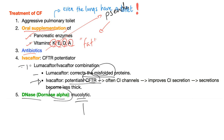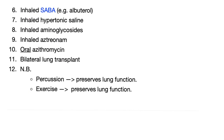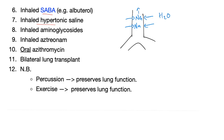DNase or Dornase Alpha is a mucolytic for the thick secretions in cystic fibrosis. You can try inhaled short-acting beta agonists such as albuterol, or inhaled hypertonic saline — the high sodium content pulls water from cells into the airway space, which is then coughed out, decreasing secretion viscosity. Inhaled aminoglycosides and inhaled aztreonam (a monobactam) are options. Oral azithromycin — as in COPD for exacerbations. Bilateral lung transplant is a last resort option.